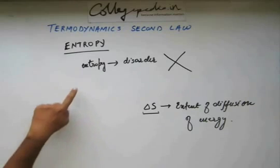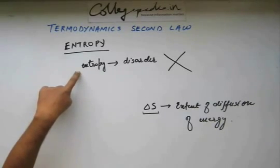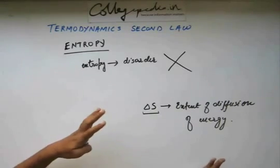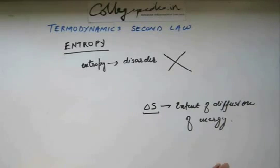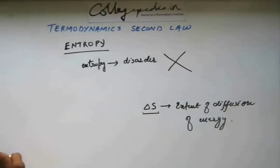Now, in books, they will tell you, and perhaps the teacher will also tell you, that entropy is the measure of disorder. Now, that's not true. When energy is being dispersed out, maybe disorder will come. But there is a disorder that doesn't mean that energy is being dispersed out.